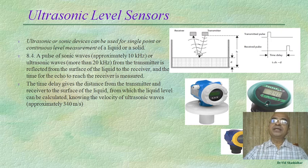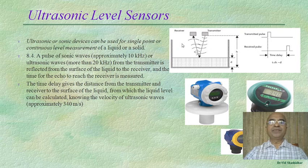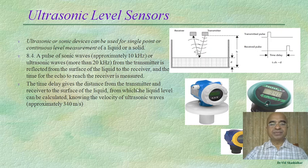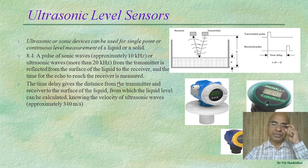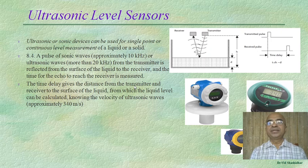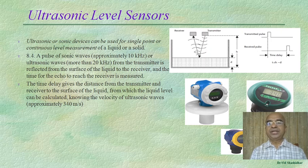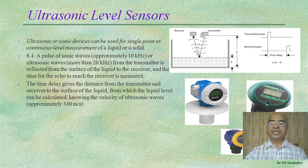The greater the time delay, the lower the level of liquid in the tank; the smaller the time delay, the higher the liquid level. The time delay gives the distance from the transmitter to the surface of the liquid. Knowing the velocity of ultrasonic waves — approximately 340 meters per second — an automated system calculates and displays the liquid level.